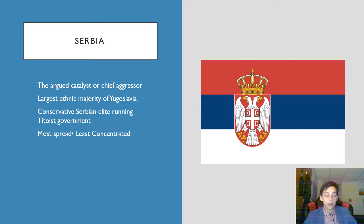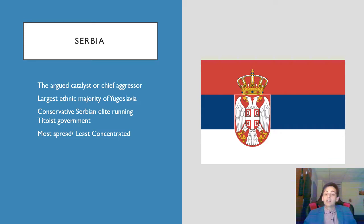We can now talk about the main players in this conflict. The first is obviously Serbia, which is always called the main aggressor — the catalyst, the bad guys. NATO conducted its bombing campaign against Serbia, not against Bosnia, Croatia, or Slovenia. Serbia has been held accountable for this.